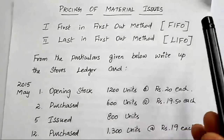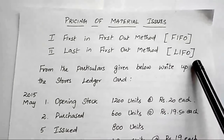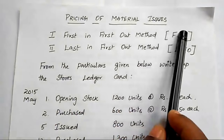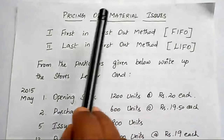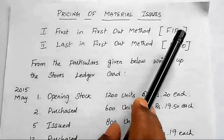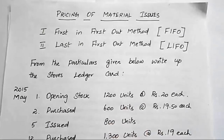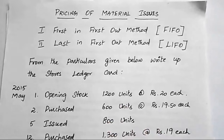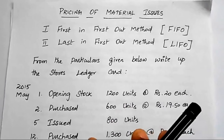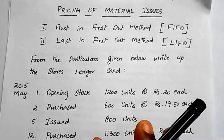In this video, I am going to explain the FIFO and LIFO method in pricing of material issue. In cost accounting, ascertainment of accurate or exact cost is one of the main objectives.